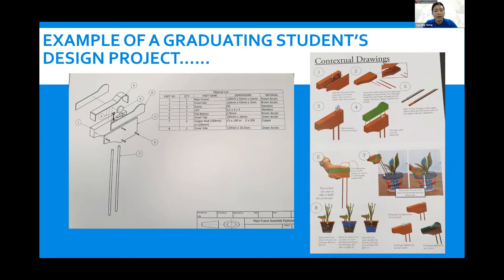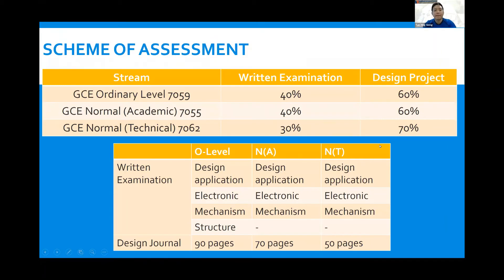I hope you have a better understanding of what D&T is about. Next, let's look at the scheme of assessment for the various streams. While learning objectives remain largely similar across all three streams, requirements are slightly different. The percentage for the written paper is 40% for O-level and NA, and 30% for NT. For NA and NT, students only need to cover two technology chapters compared to three in O-level.